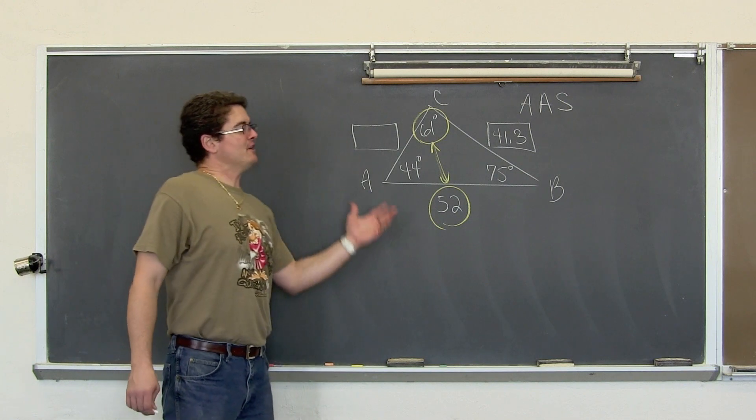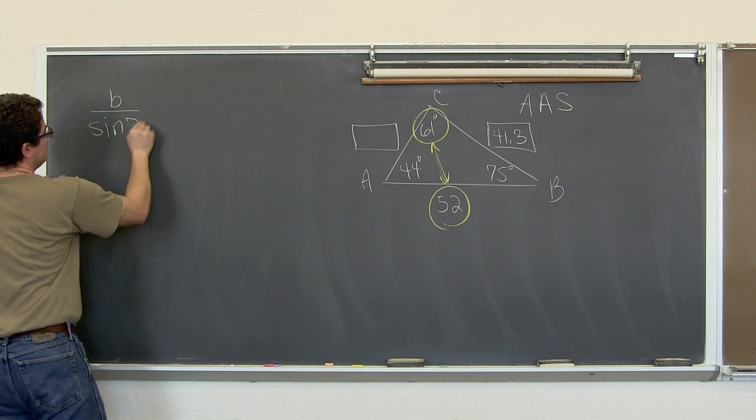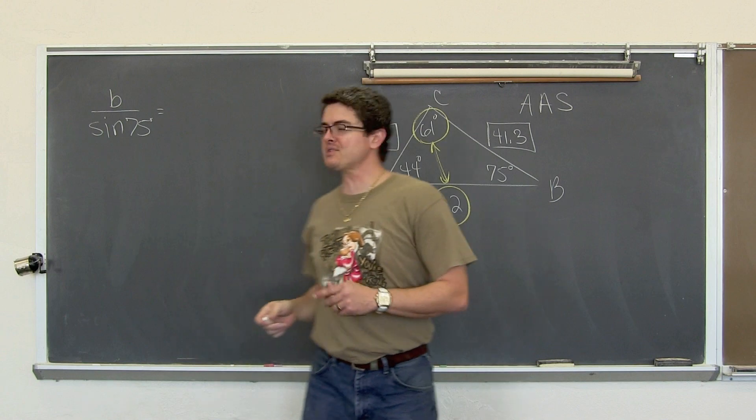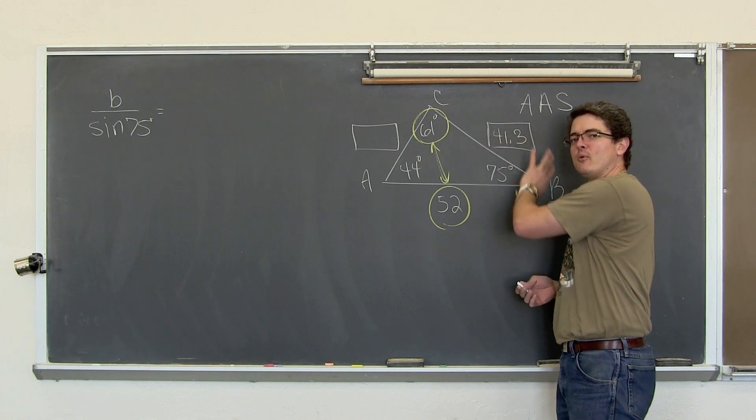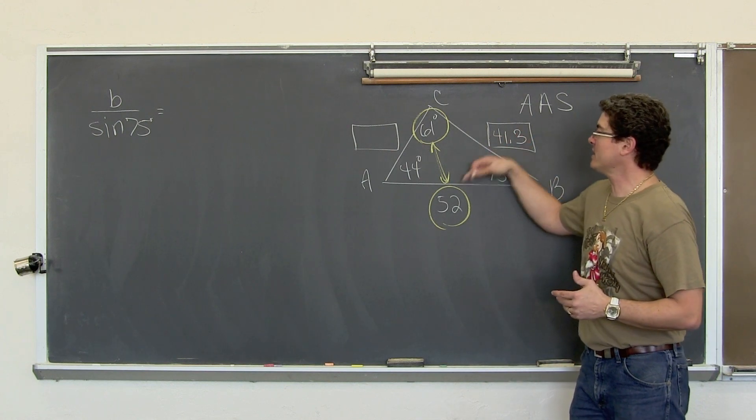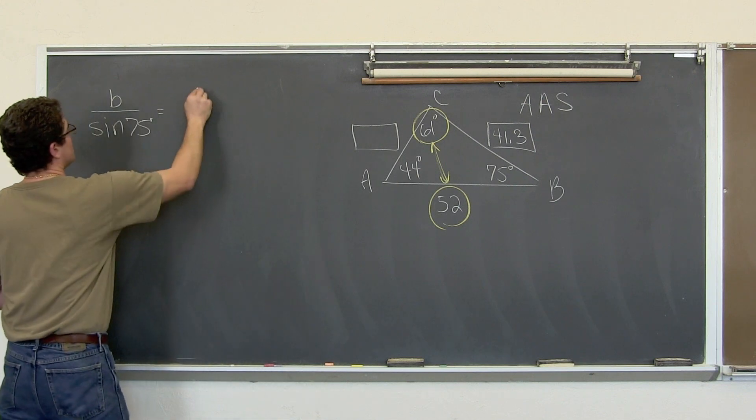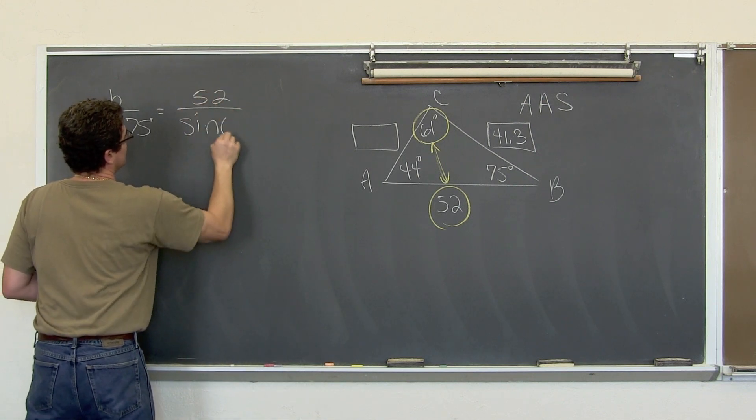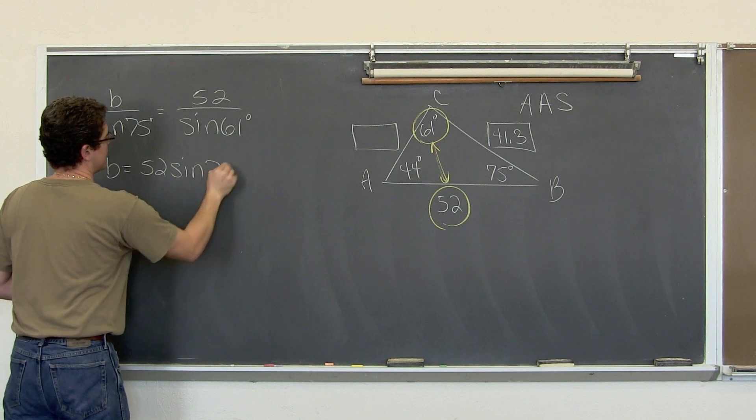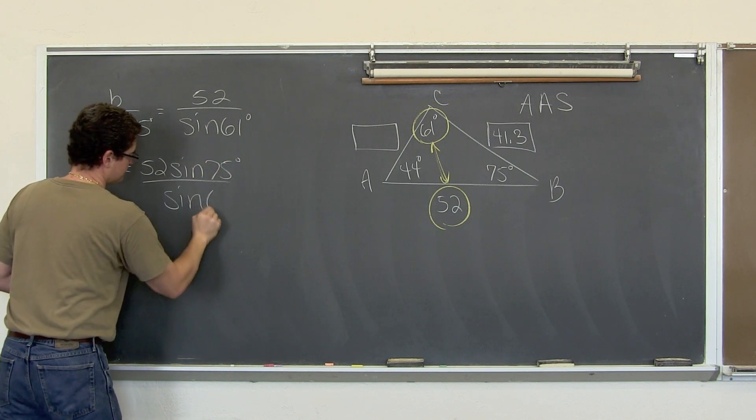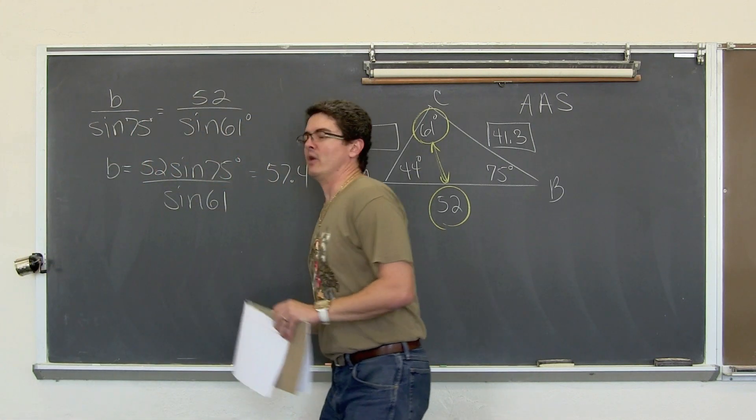So we have enough information now to find side b. I am going to use the 52 and 61 degrees pairing again because if I hit a button wrong and the 41.3 is a little bit off, I don't want to carry that mistake into another answer. So it is b over the sine of 75 degrees equals 52 over the sine of 61 degrees, and b equals 52 times the sine of 75 degrees divided by the sine of 61, which comes out to be 57.4 units.